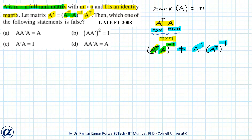Now, given these, we want to find which one of the following statements is false. Three of the options contain A times A dash, so let's first evaluate A times A dash. A times A dash equals A into A transpose A inverse into A transpose.